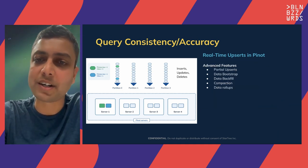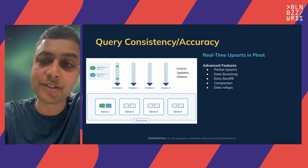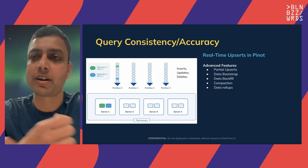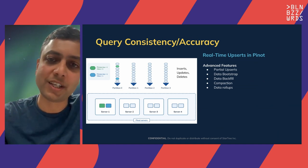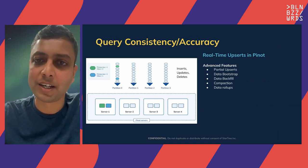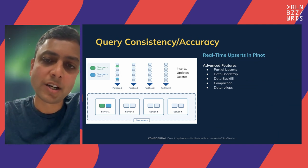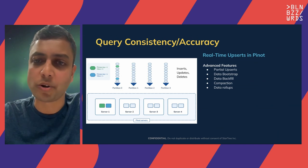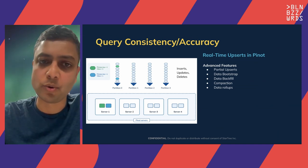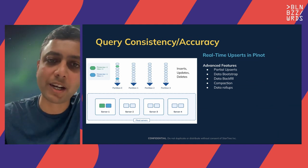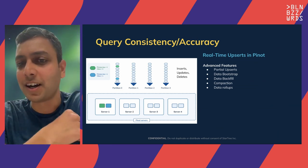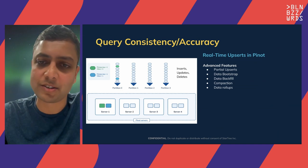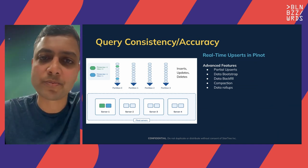Other advanced features that make this use case easier include partial upserts — where updates flow in at a column level rather than a full row change — for example when only an address column is updated. Pinot also supports bootstrap and backfill through the minion framework for bootstrapping years of data quickly. And finally, compaction — similar to LSM, as you keep updating new data the old data becomes obsolete, and compaction cleans up and reduces storage overhead. Both compaction and rollup are supported in Pinot in the presence of upserts.